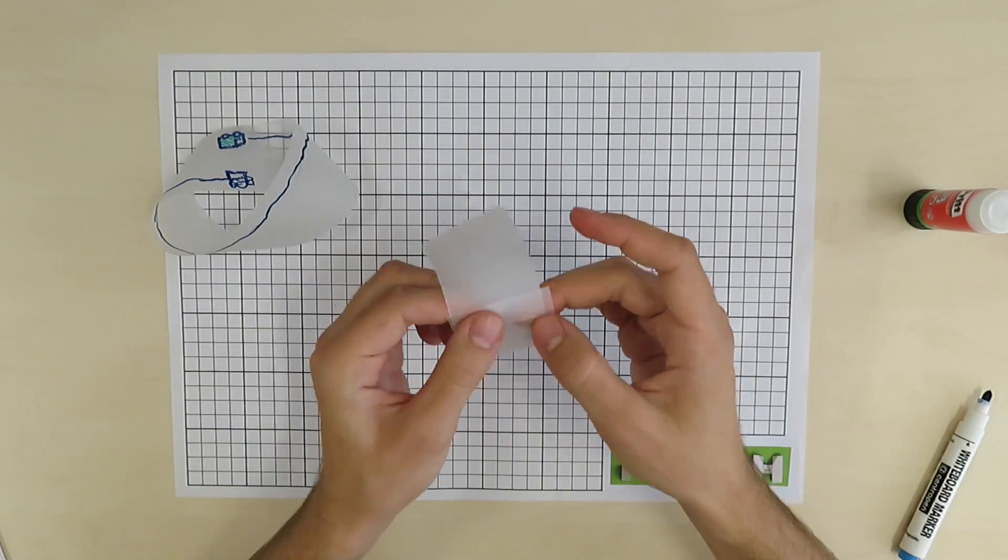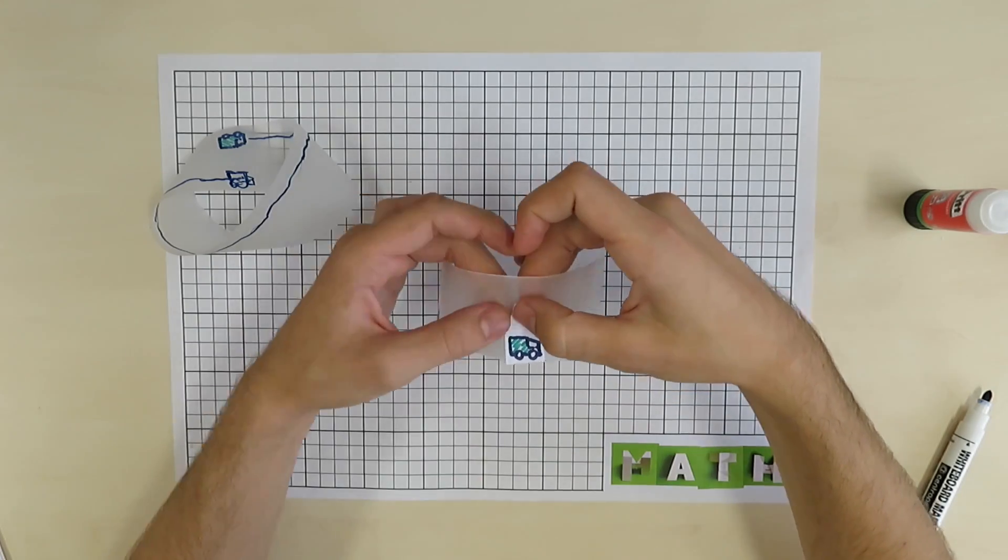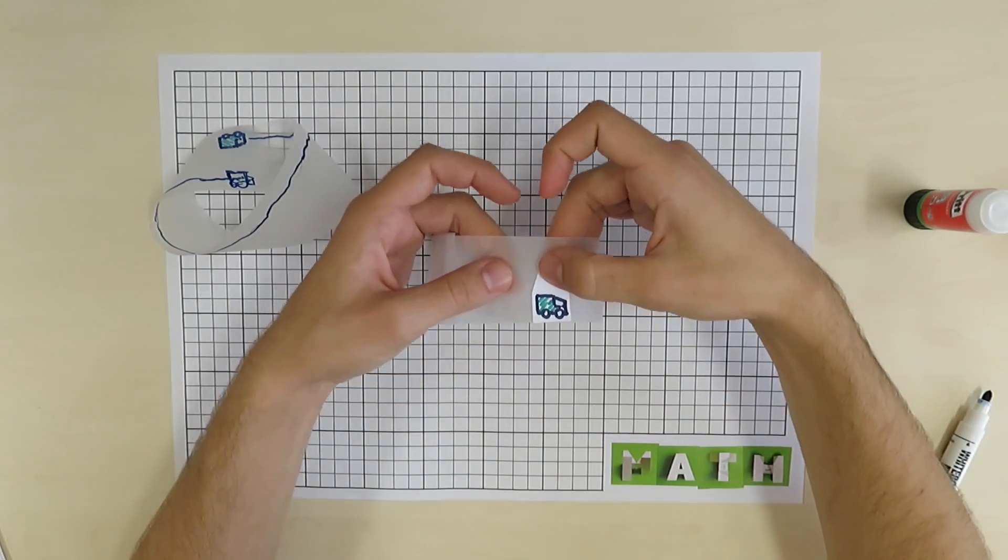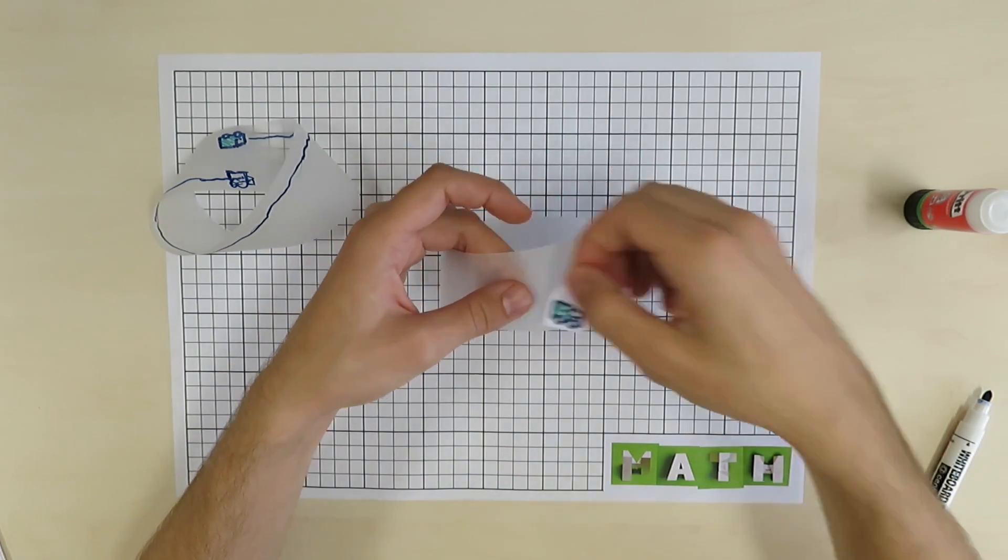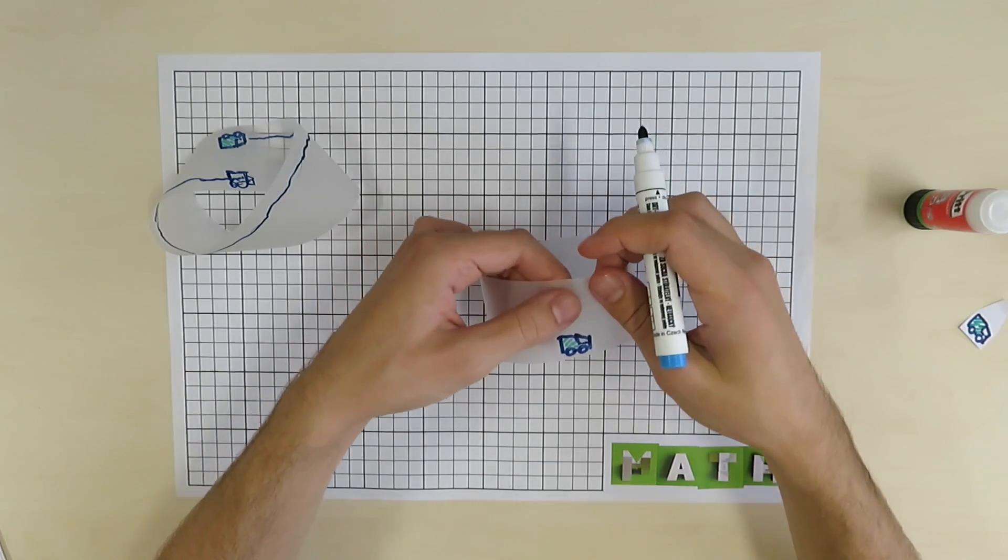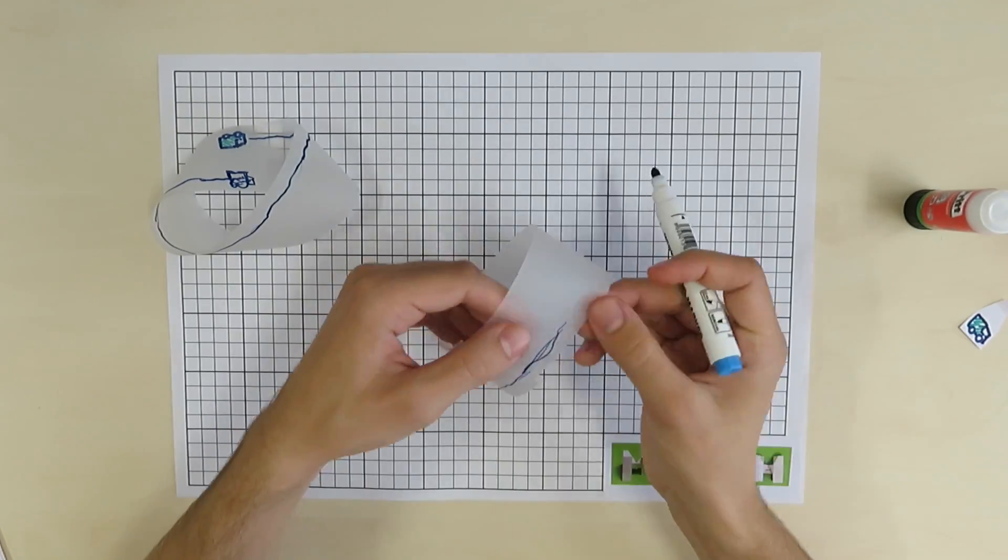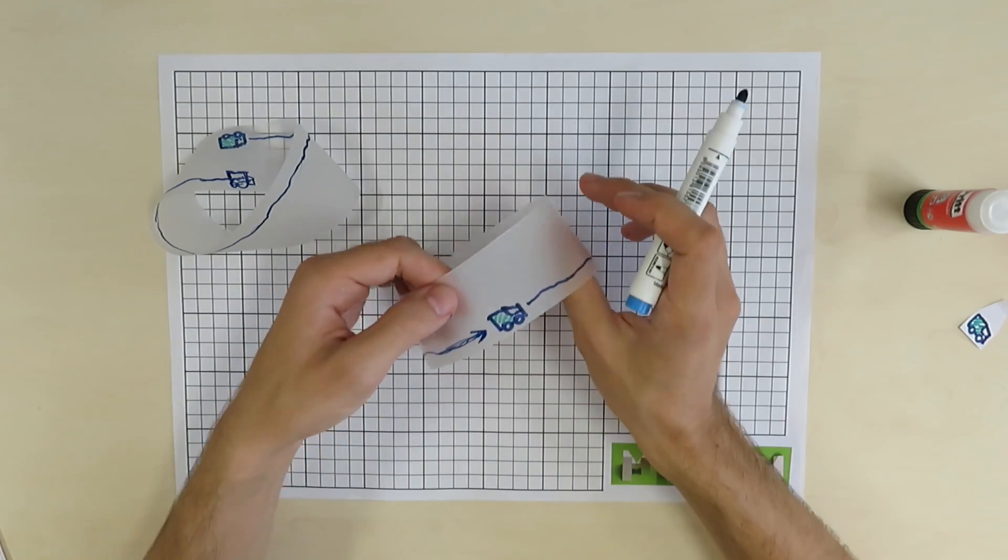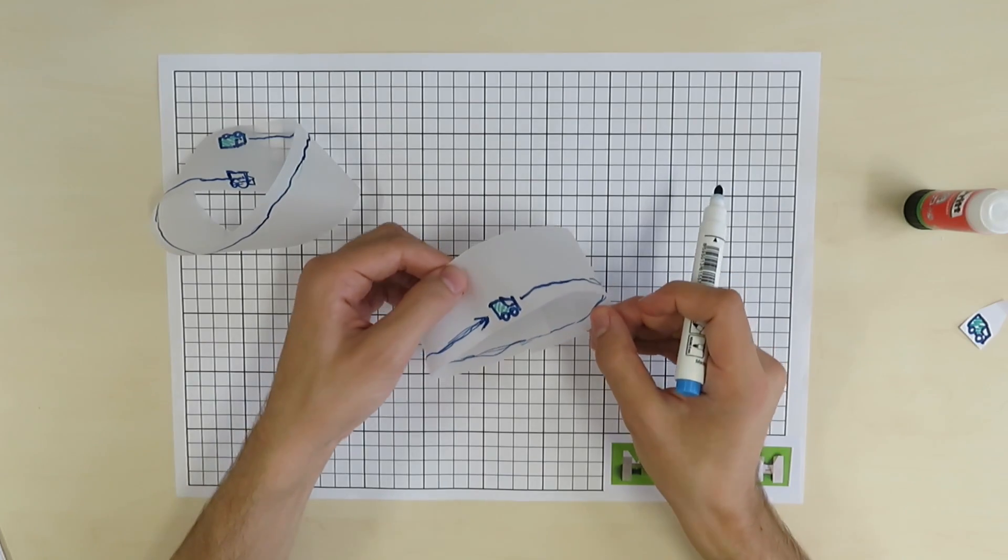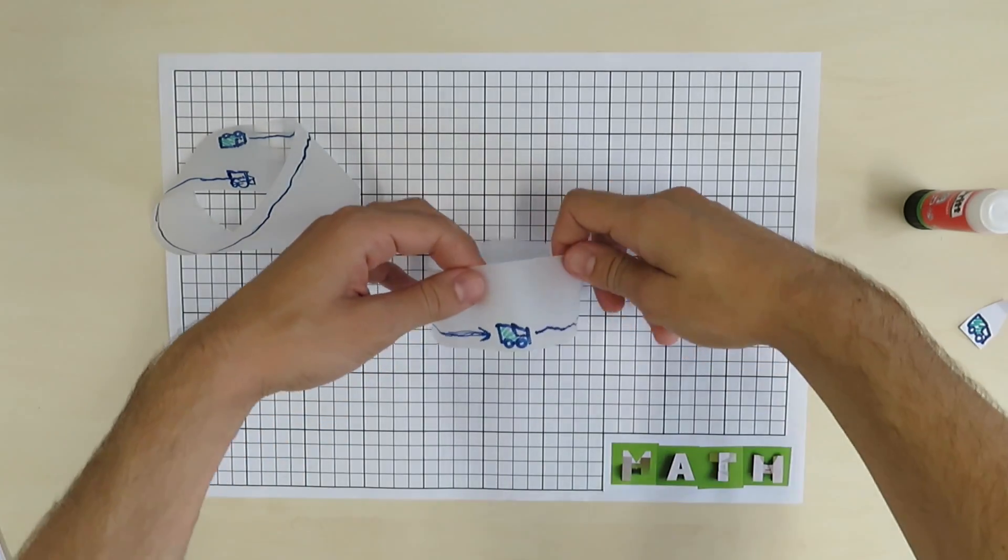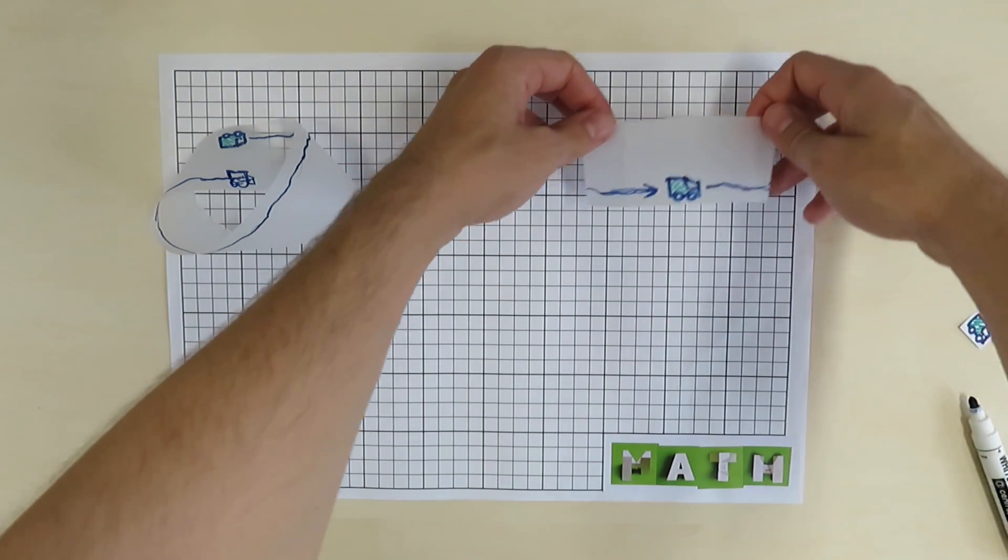On the zero twist loop, we simply arrive where we started. And when we draw a line along one edge, we just arrive where we started as we would expect. This is the key difference between Möbius strip and zero twist simple loop, that we will try to capture using a math model.